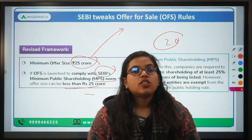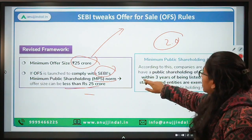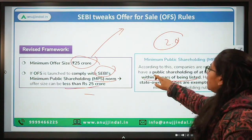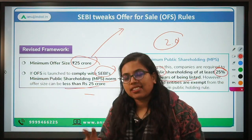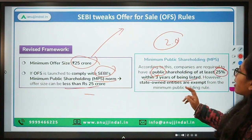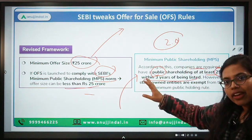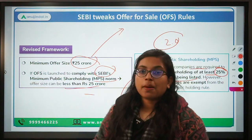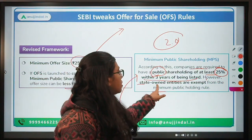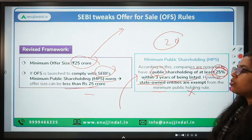What is minimum public shareholding? This is a requirement by SEBI whereby any company that gets listed is required, within three years of being listed, to have a minimum of 25% of its entire stake taken up by the public. The general public should hold at least 25% of the total shares of that company. It is the company's responsibility to ensure compliance with these minimum public shareholding norms. All public sector enterprises, PSUs, public sector banks, and state-owned entities are excluded from this requirement.